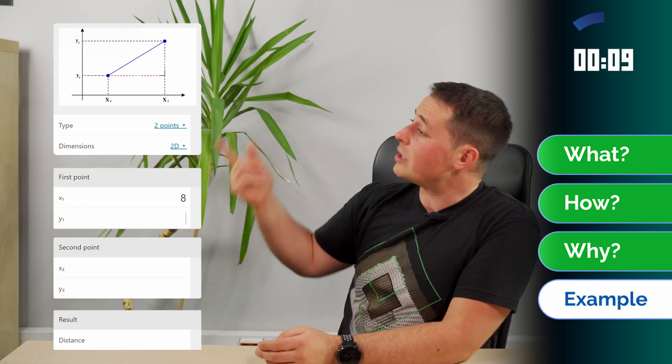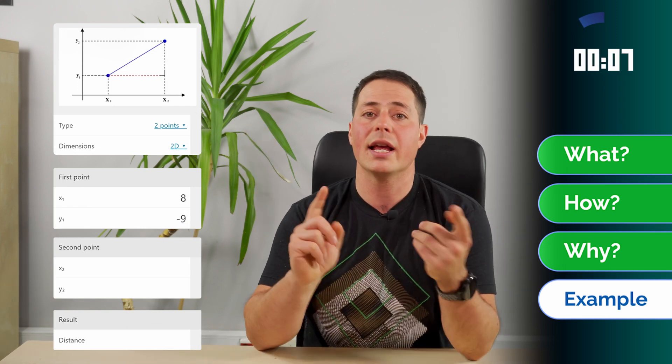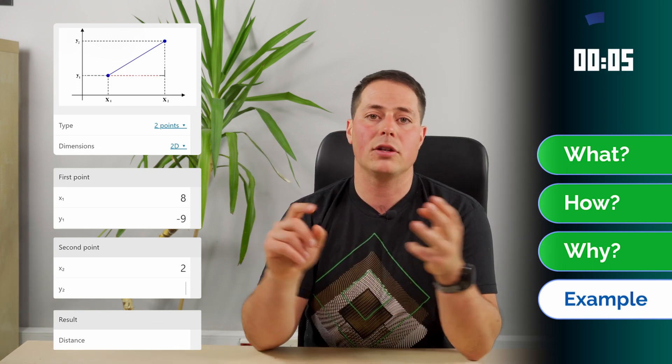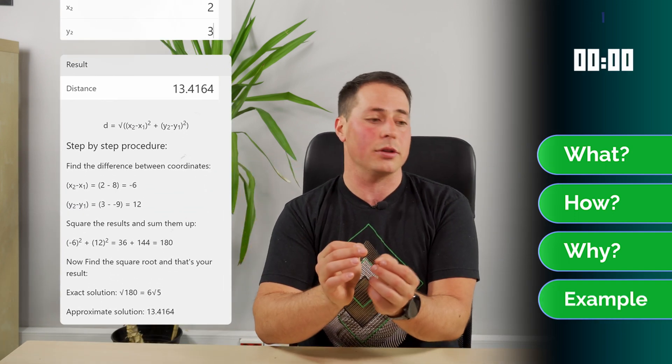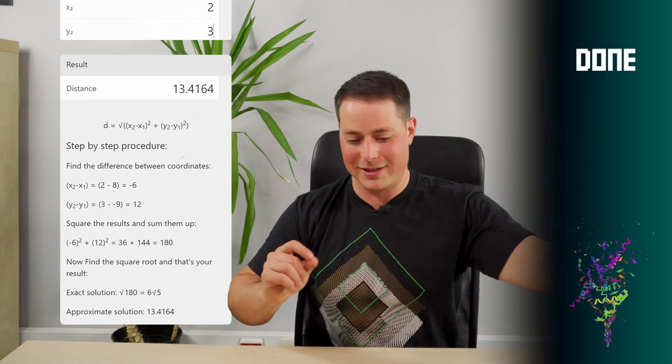And let me show you with an example. We select two dimensions, we select points 8 and minus 9 and 2 and 3, and we get the result, yes, the number, but also the step-by-step solution. And we finish the time.